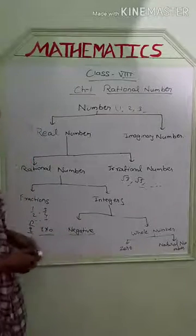The third property: if we have two rational numbers P by Q and R by S, and P by Q equals R by S, then these two rational numbers are equal. If we do cross multiplication — P multiplied by S equals Q multiplied by R — we get equal results.